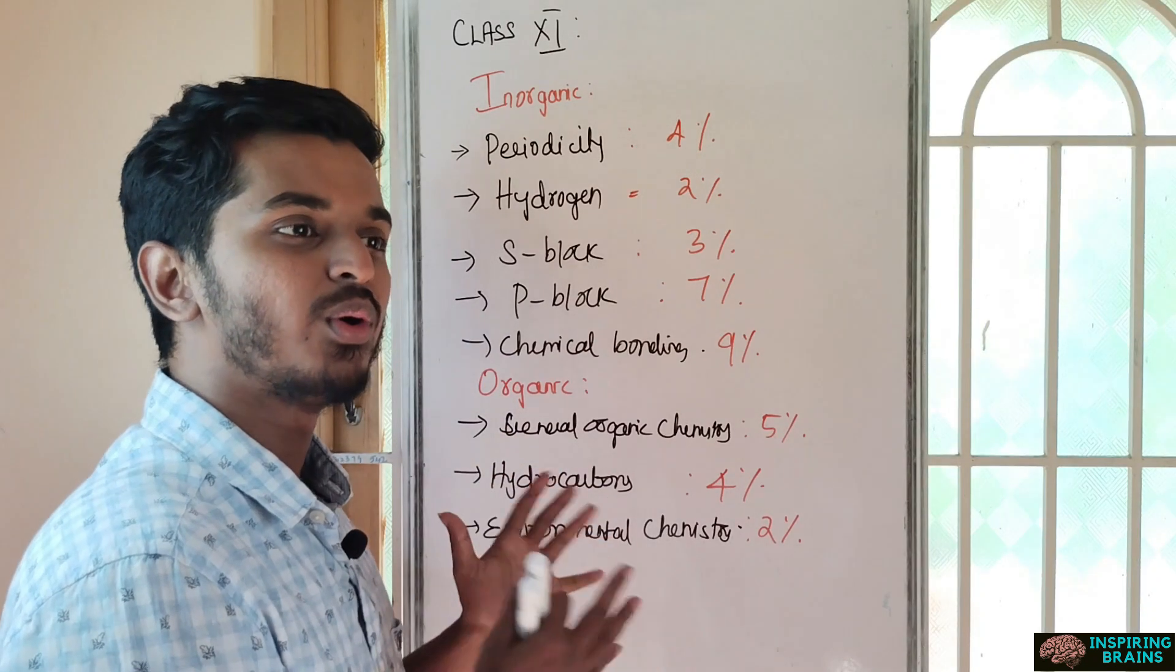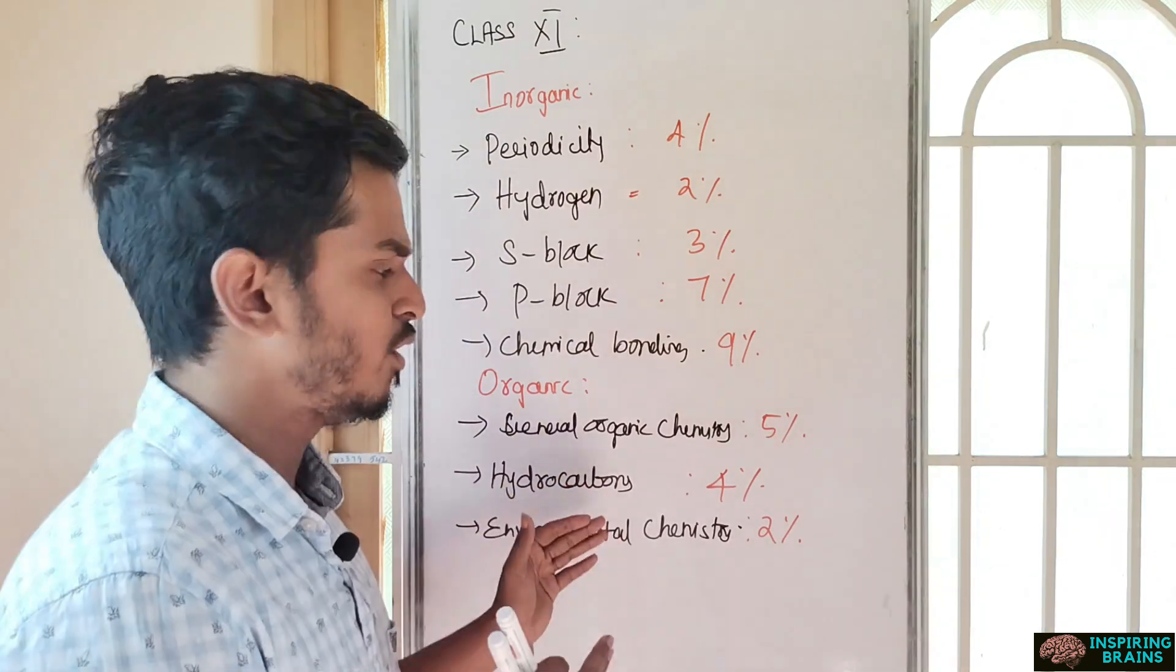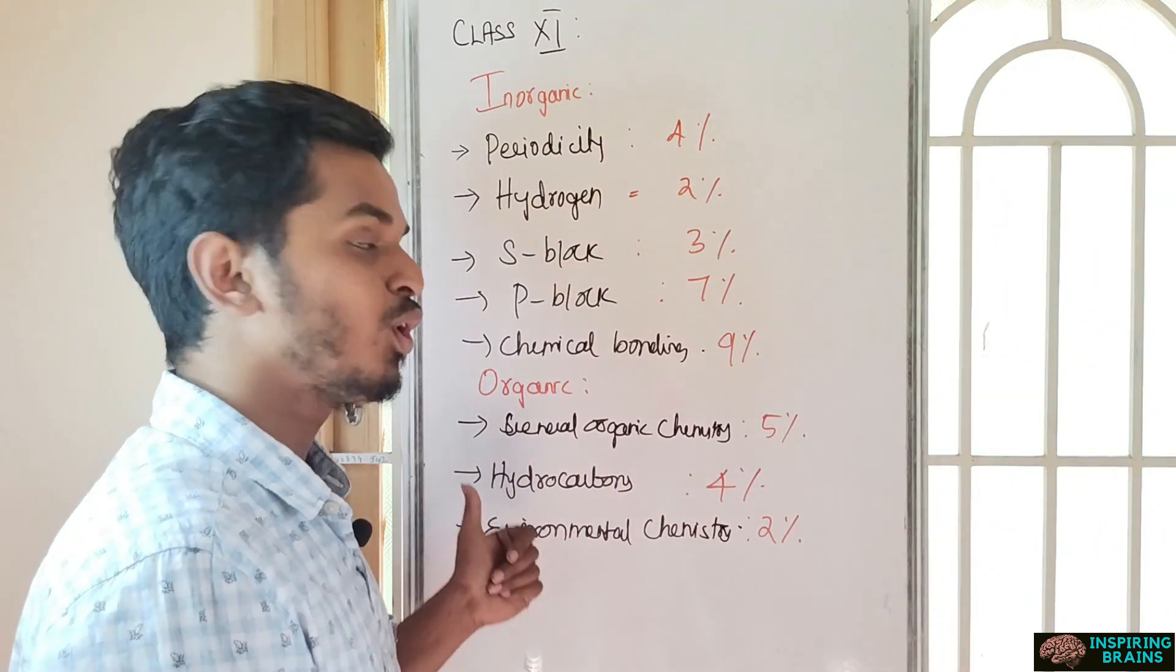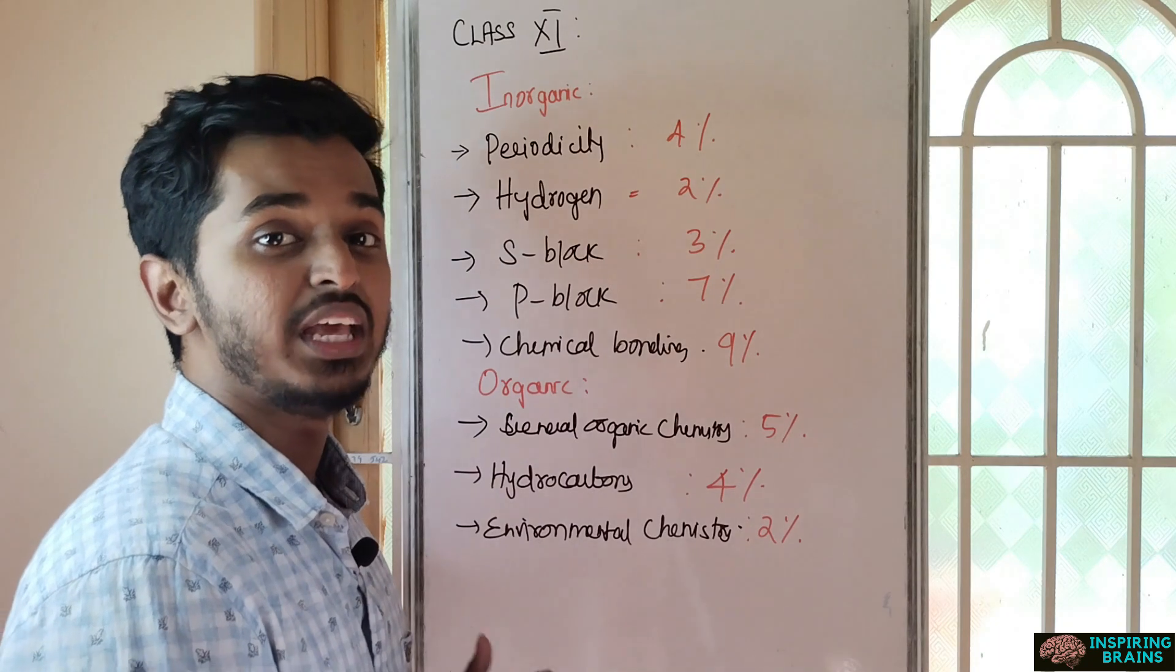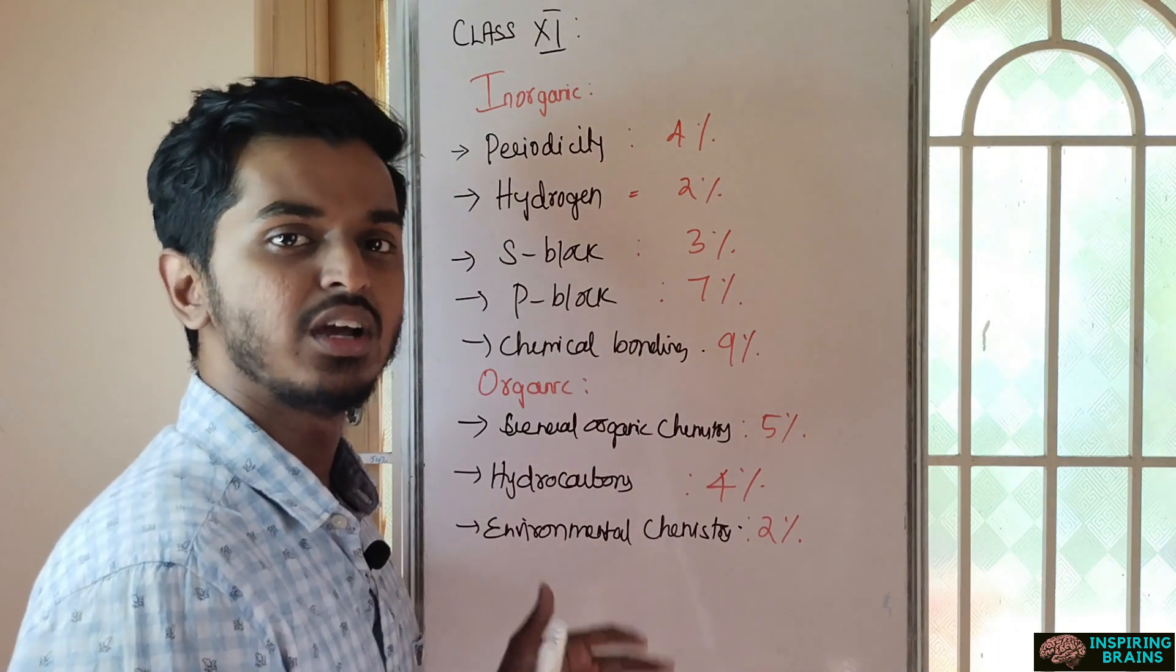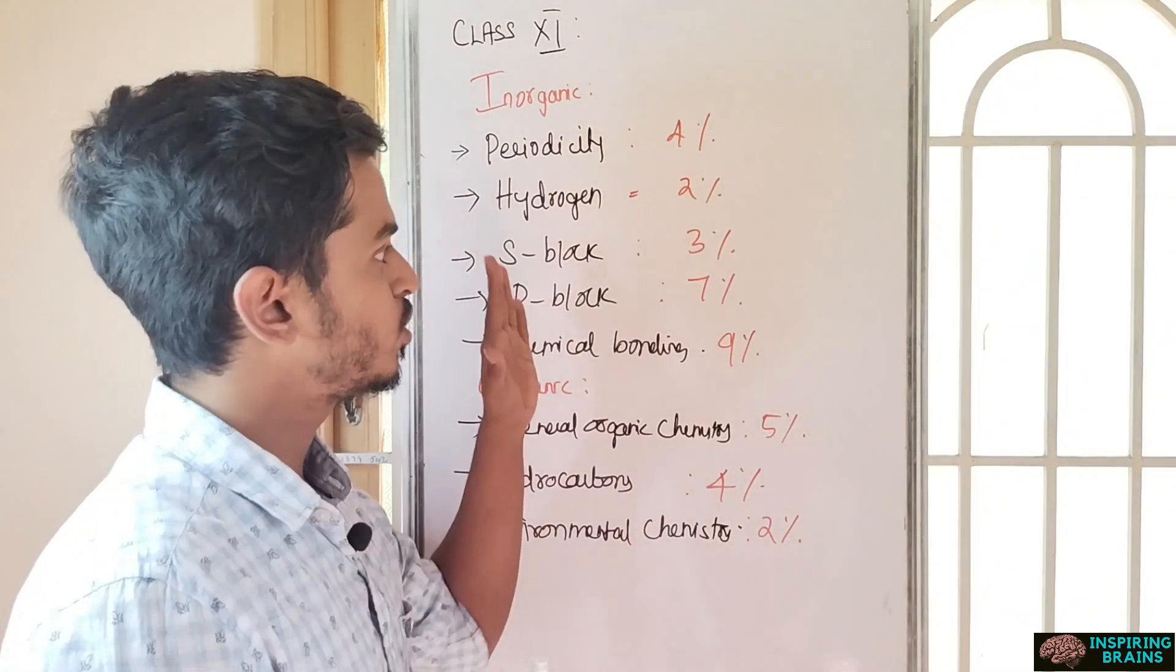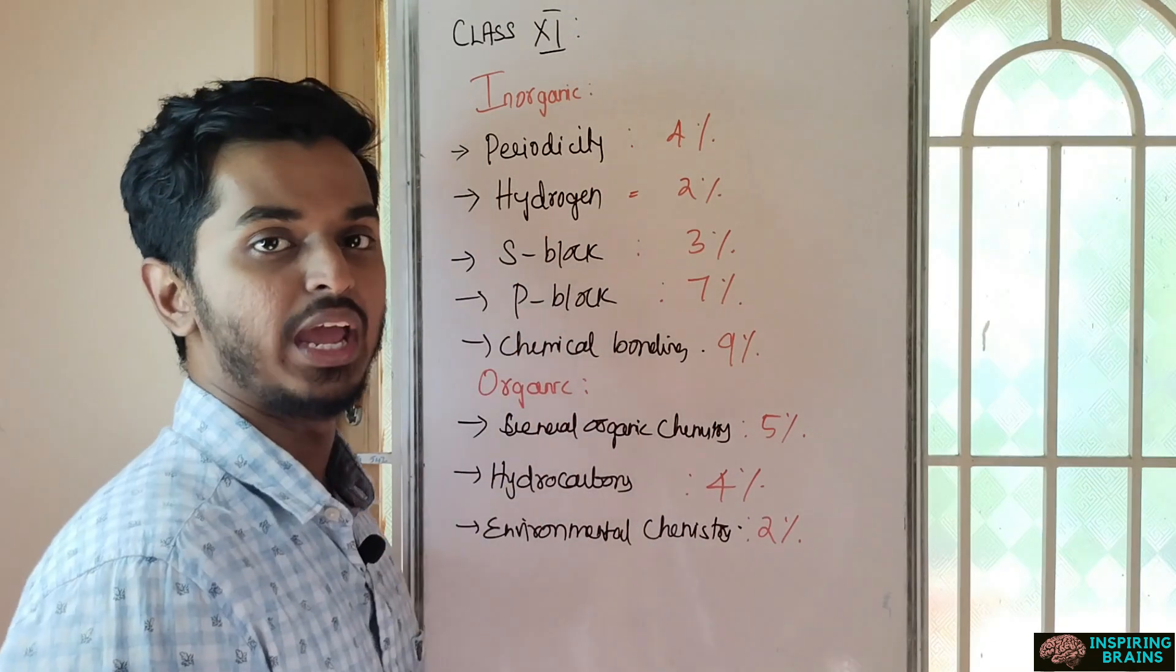Hydrocarbons - it's not tough or not easy, it's a medium level unit. You can finish it and get 4%, 1 or 2 questions. Environmental chemistry is more of a theory concept, anyone can read it in a very short period of time. Don't leave environmental chemistry.